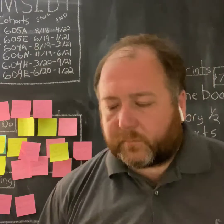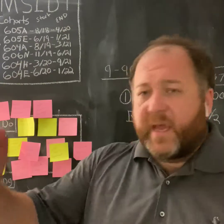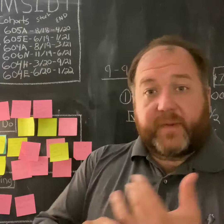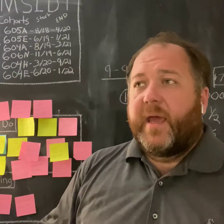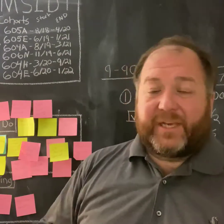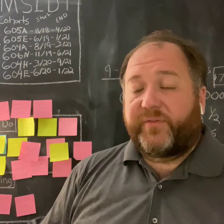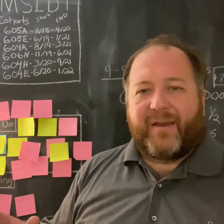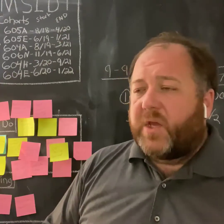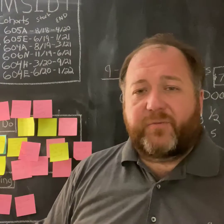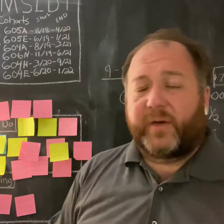It sounds like the Tuckman model would be very linear — you start at forming, go through storming, norm your behavior, and then start performing. But it's not always linear and doesn't always follow a predictable pattern. Things can toss you for a loop. The situation can change and you may need to re-establish norms, or a new person may enter the group and you could end up going all the way back to forming and storming as the new pecking order is determined.